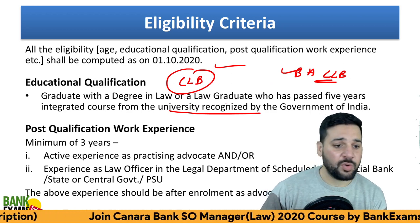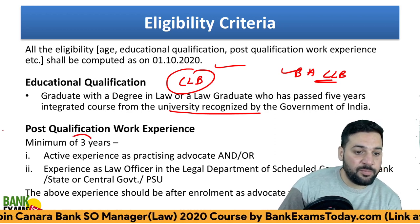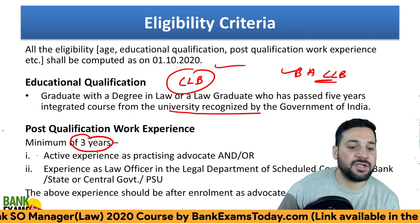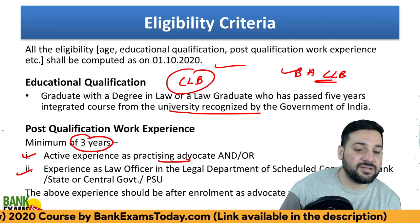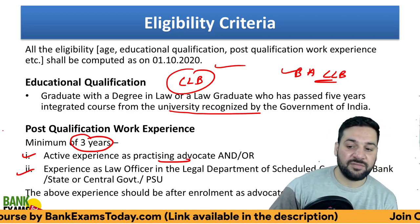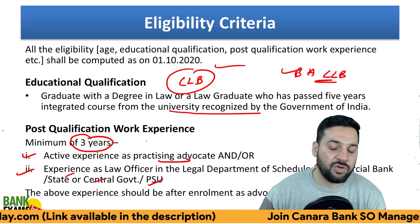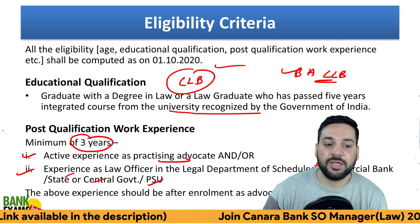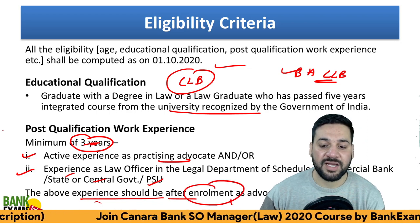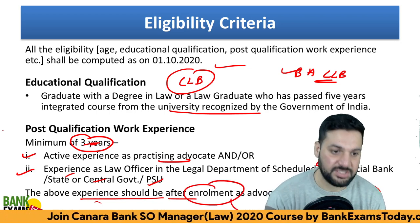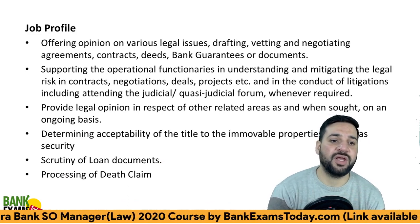Post-qualification experience of three years is required — please note that. Three years of active experience as a practicing advocate, or experience as a law officer in the legal department of a scheduled commercial bank, state or central government, or PSU. The above experience should be after enrollment as an advocate with the Bar Council.